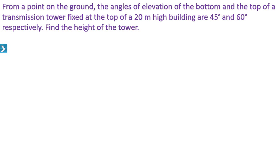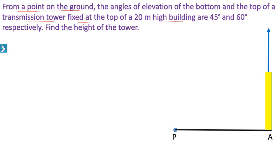Understand this question. From a point on the ground, the angles of elevation of the bottom and the top of a transmission tower fixed at the top of a 20 meter high building. Tower is fixed at the top of a building — this is the building and it is the tower. BC is the tower, fixed at the top of a 20 meter high building. AB is the building; height of the building is 20 meters.